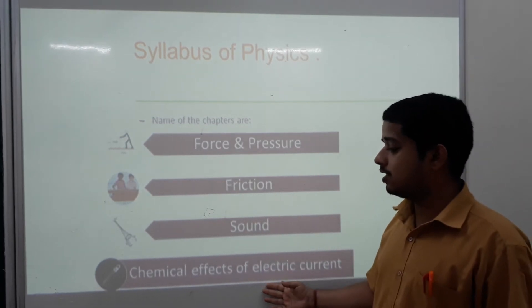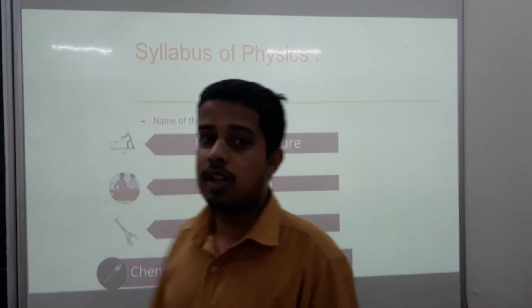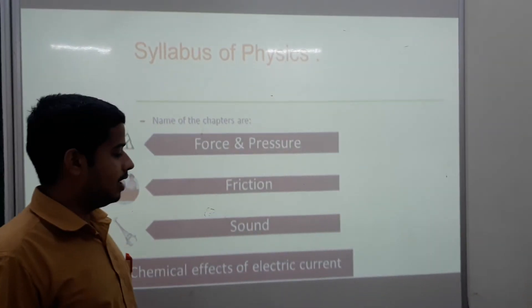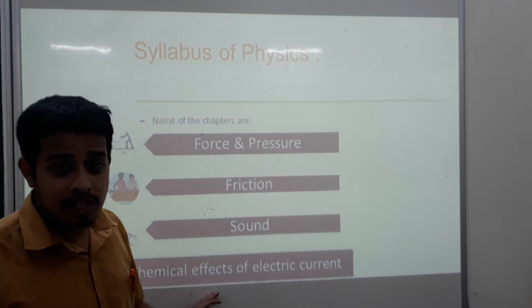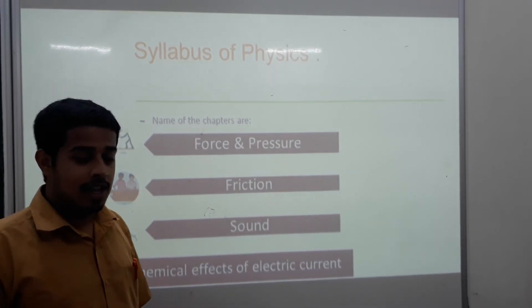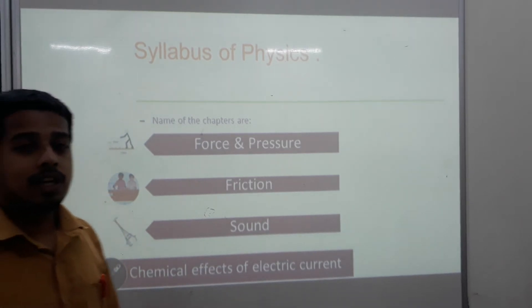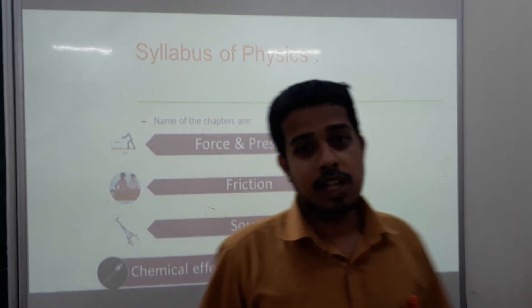And next chapter is Chemical Effects of Electric Current. In class 7, we have learned about many effects of electric current, like the lighting effects, magnetic effects, heating effects. And in this chapter, we will learn in details about the chemical effects of electric current.